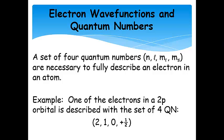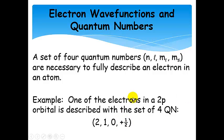So one of the electrons in a 2P orbital: N would be 2, L would be 1, M sub L could be negative 1, 0, or 1 — I chose 0 in the previous example — and M sub S can be either plus one-half or minus one-half. This set of four quantum numbers describes one of the electrons in one of the 2P orbitals.